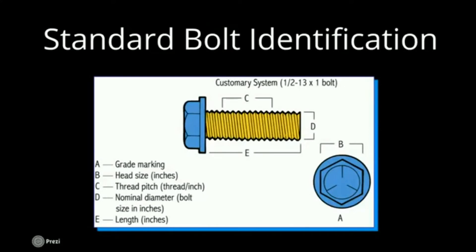D is the nominal diameter or the bolt size. It's the diameter of the bolt at the threads, the nominal diameter. And E is the bolt length from the bottom of the head to the end of the bolt.